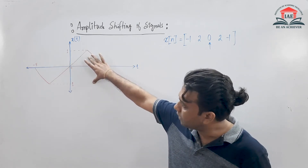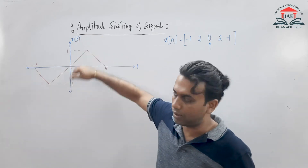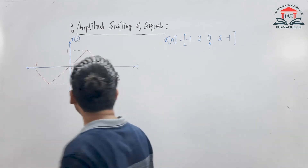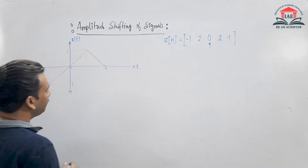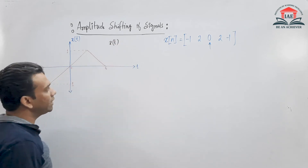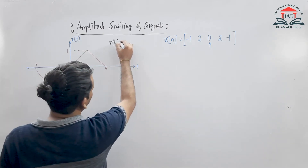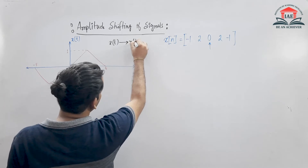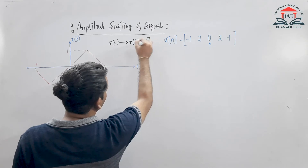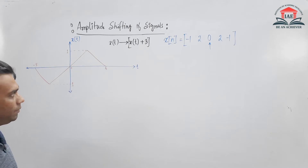Amplitude shifting means the signal will now shift in the amplitude scale — that is, along the y-axis. The signal goes up or down. So now let us see what amplitude shifting is. For that, let us take a continuous time signal x(t).